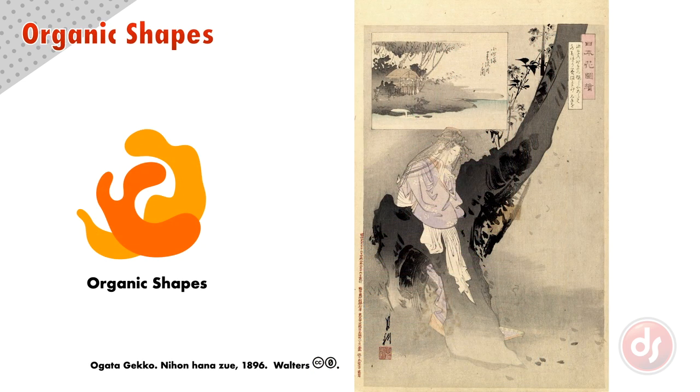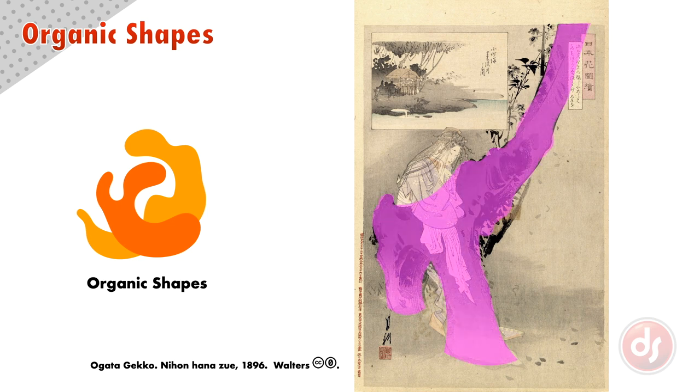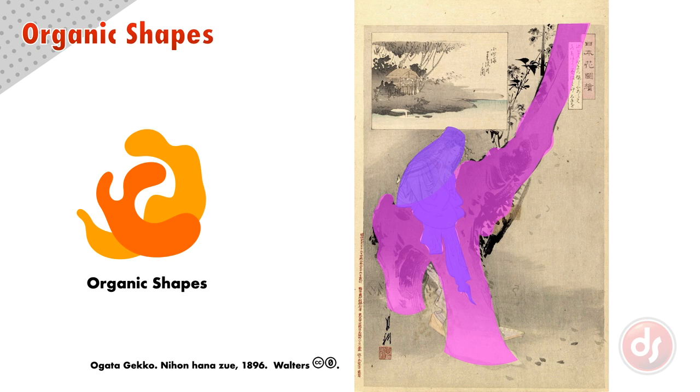Organic shapes are those shapes that are irregular and not mathematically repeatable in their design. Organic shapes relate more to nature. Ogata Gekko's print shows the female spirit of a cherry tree emerging to stop a man who desires to cut it down. Gekko describes the tree with beautiful organic forms. He links the spirit figure to the tree by having her robes undulate in a way that mimics the organic qualities of the tree. This gives a visual clue to her relationship to the tree and hints at her otherworldly origins.